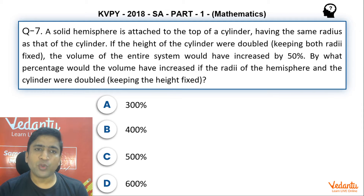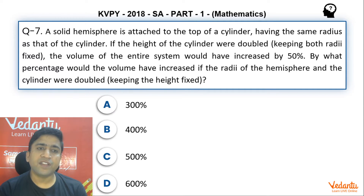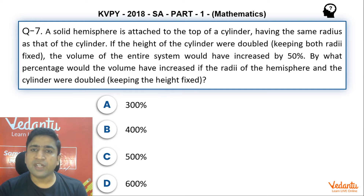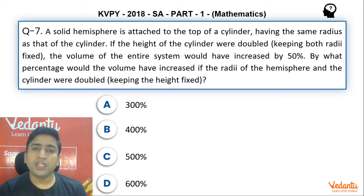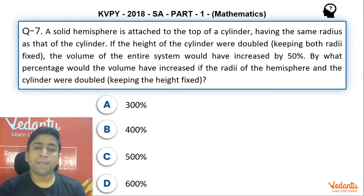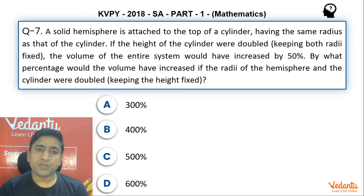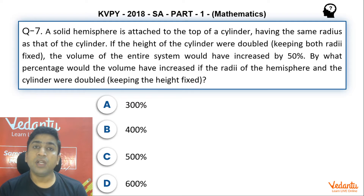The question says: a solid hemisphere is attached to the top of a cylinder having the same radius as that of the cylinder. If the height of the cylinder were doubled, keeping both radii fixed, the volume of the entire system would have increased by 50%. By what percentage would the volume have increased if the radii of the hemisphere and the cylinder were doubled, keeping the height fixed? The options are: (a) 300%, (b) 400%, (c) 500%, (d) 600%.